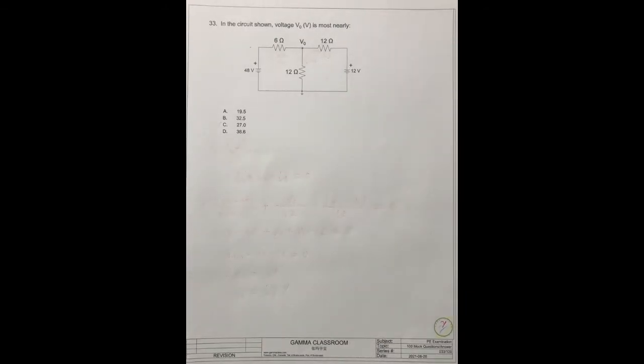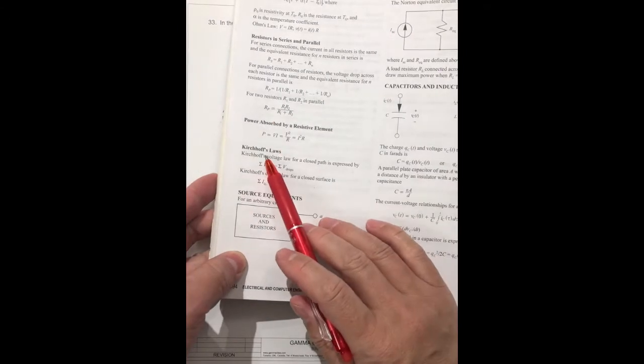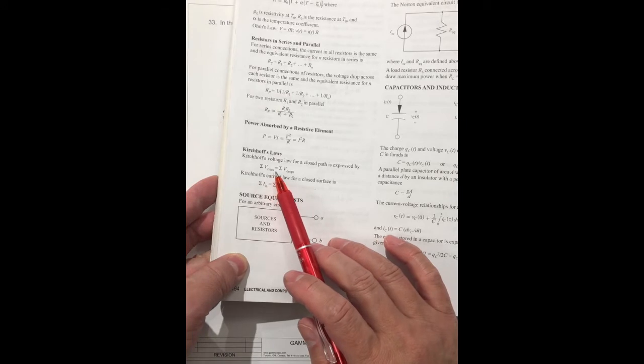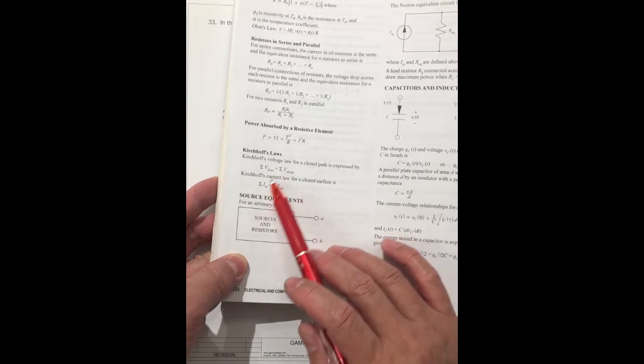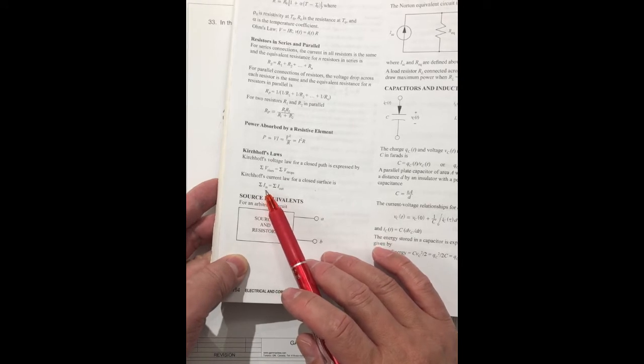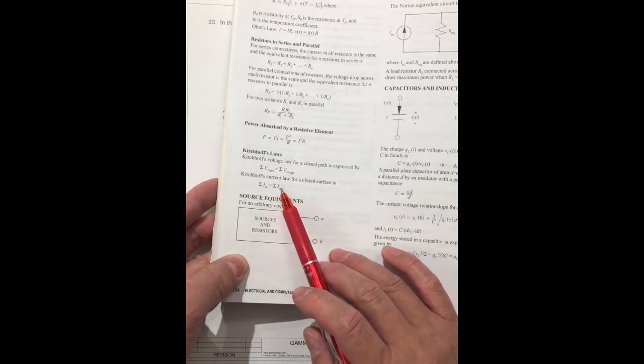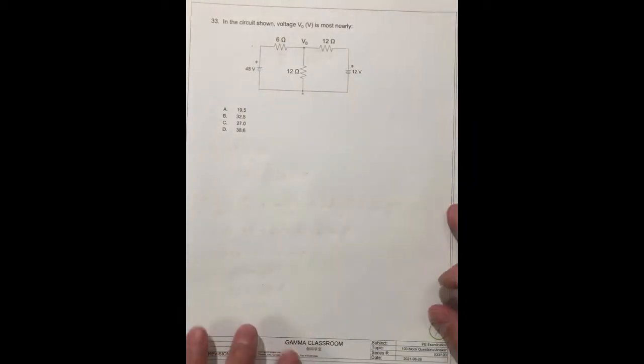It's very easy. In the FE Handbook, page 194, they have the Kirchhoff laws. The voltage rise sigma should be equal to voltage drop sigma, or the current flow in should be equal to current flow out at any point. So let's solve this question.